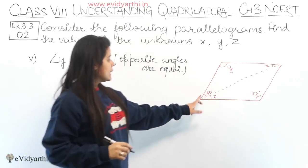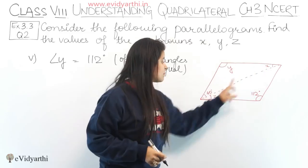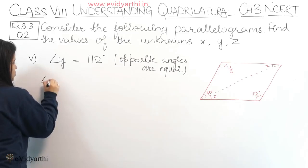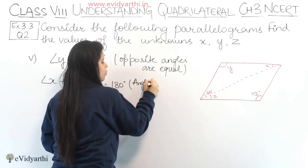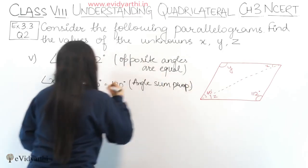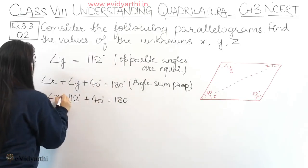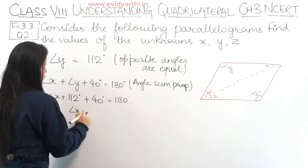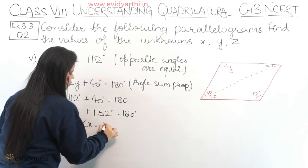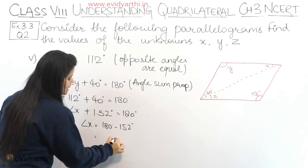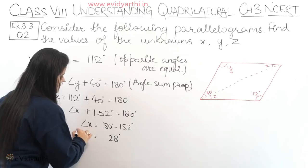Now we have y. The diagonal divides the parallelogram into two triangles. With angle 1 = 40° given, we use angle sum property: angle x + angle y + 40° = 180°. Substituting y = 112°: 112 + 40 = 152, so angle x = 180 - 152 = 28°.